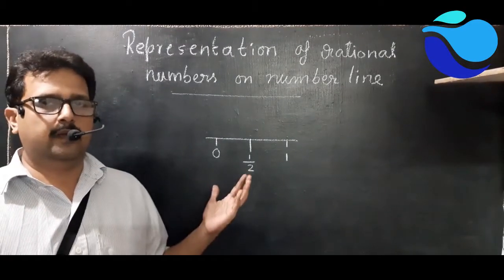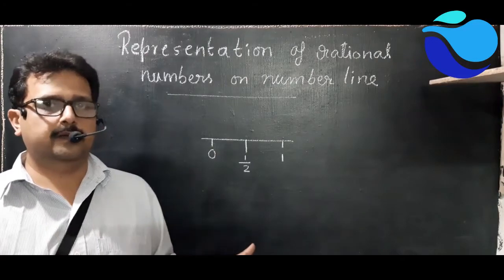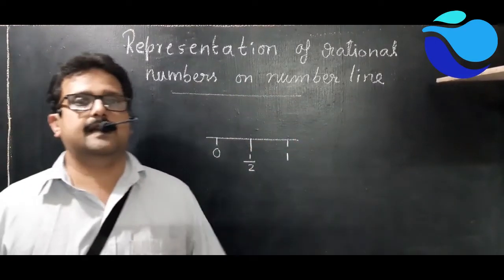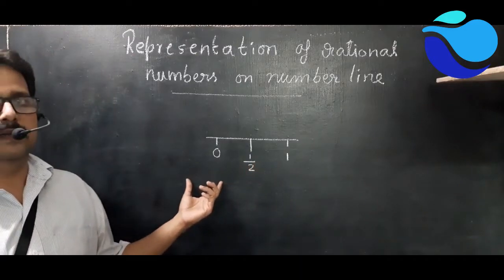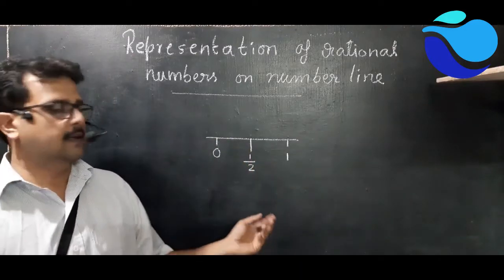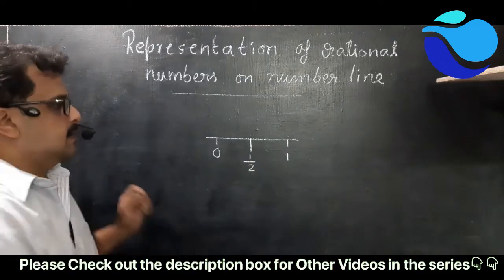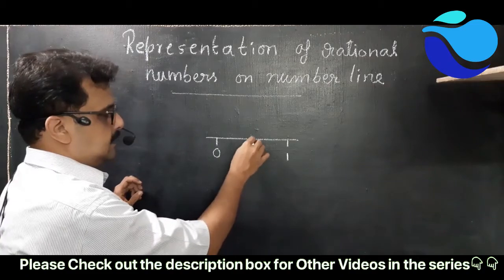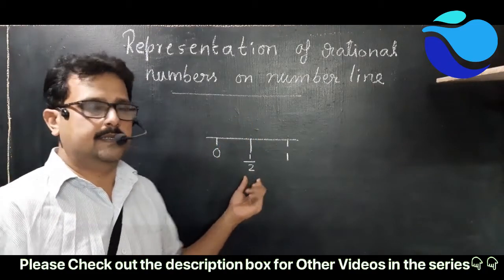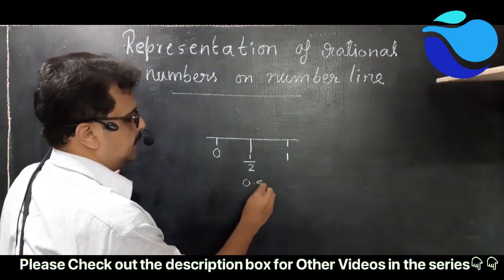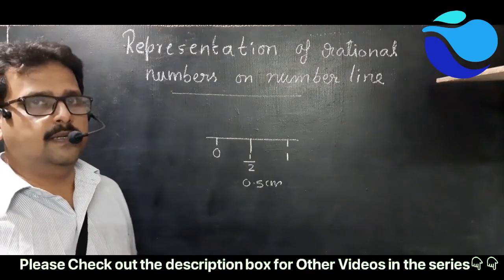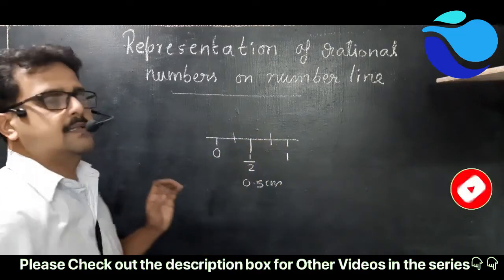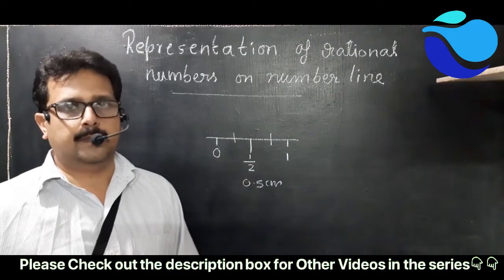Hello everyone. In today's video we are going to discuss a main topic of rational numbers — representation of rational numbers on a number line. I have drawn here a small part of our scale, zero and one. In your scale you have observed that between two large values there is a slightly longer line. We call it half centimeter or 0.5 centimeter. Half means we are dividing anything into two equal parts.